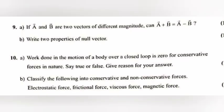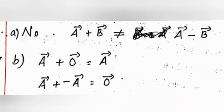Question 9: (a) If A and B are two vectors of different magnitude, can A plus B equal A minus B? (b) Write two properties of null vector. Answer: (a) No. A plus B is not equal to A minus B.